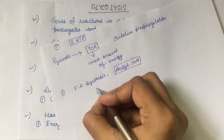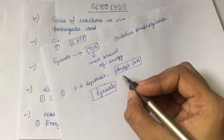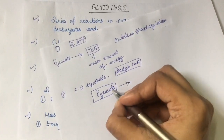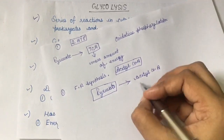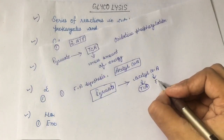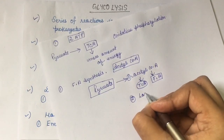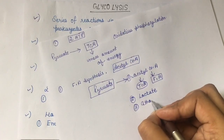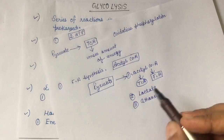As an outline, the pyruvate that is formed has different fates. I'll make a separate video on the regulation of glycolysis and about the fates of pyruvate. Pyruvate forms acetyl coenzyme A, which then enters into the TCA cycle. This acetyl coenzyme A is also the precursor for fatty acids. Then pyruvate also forms lactate under anaerobic conditions, and it can also get converted into ethanol. These have their own significance which will be discussed in the next video.